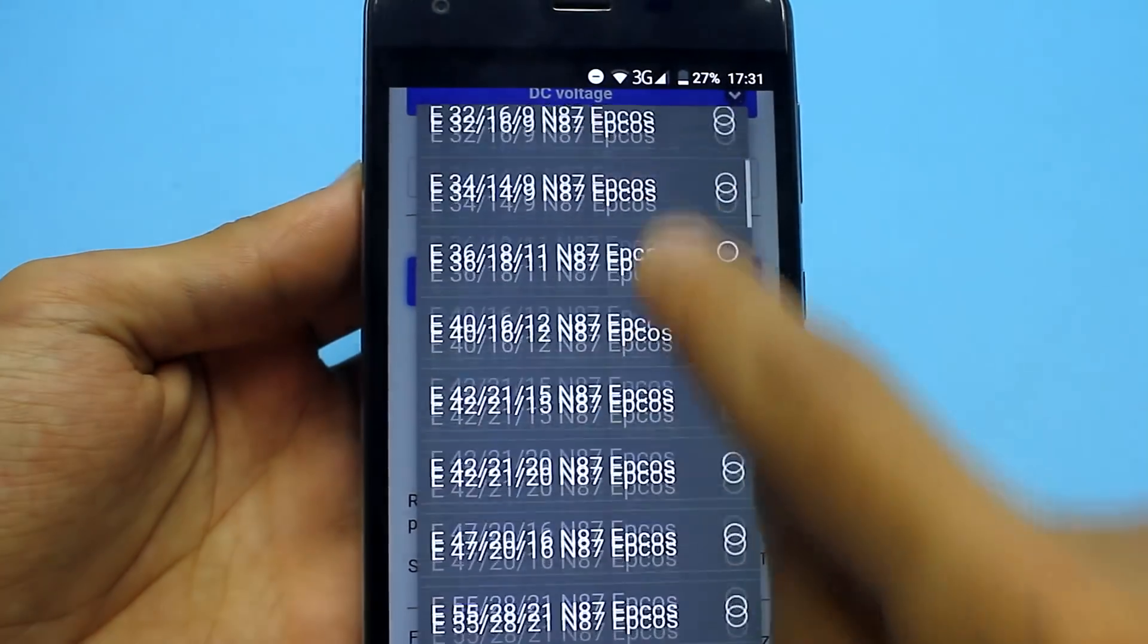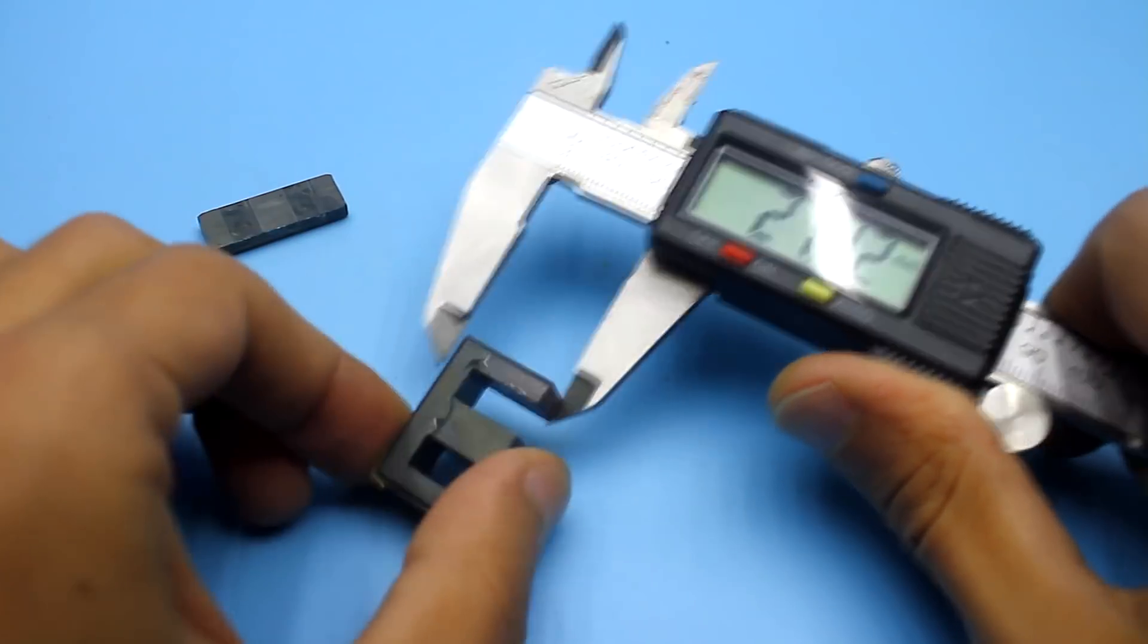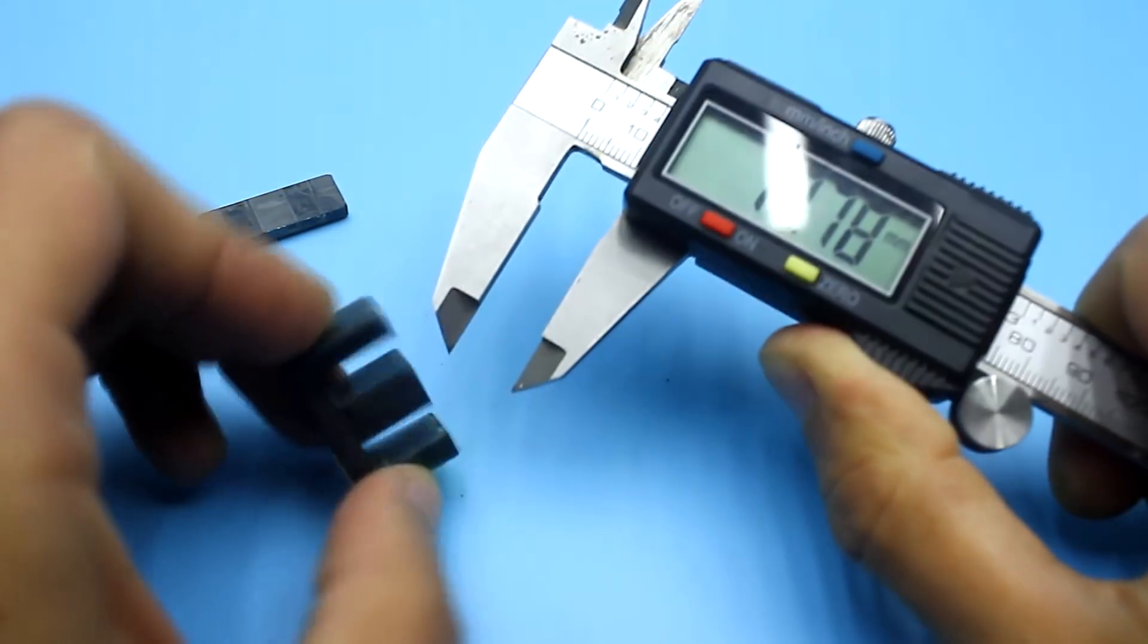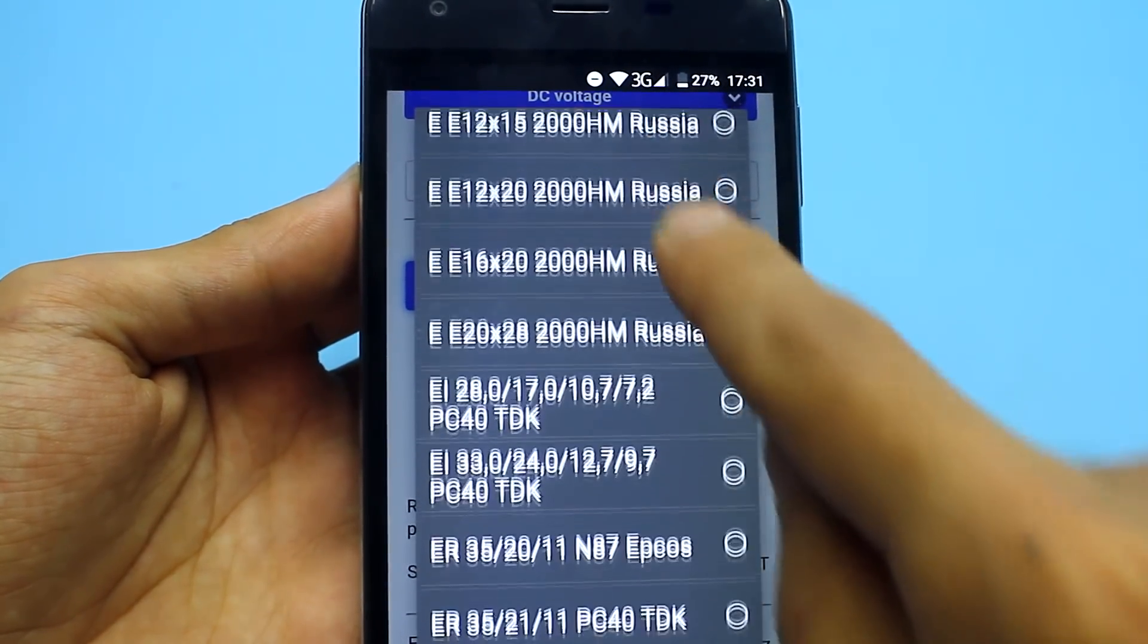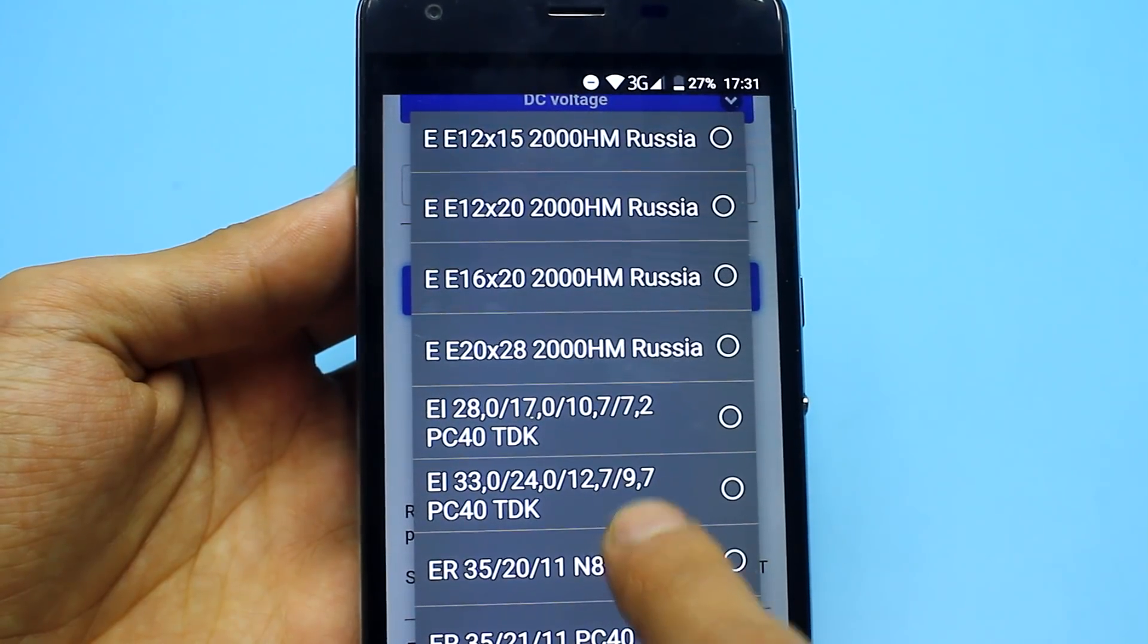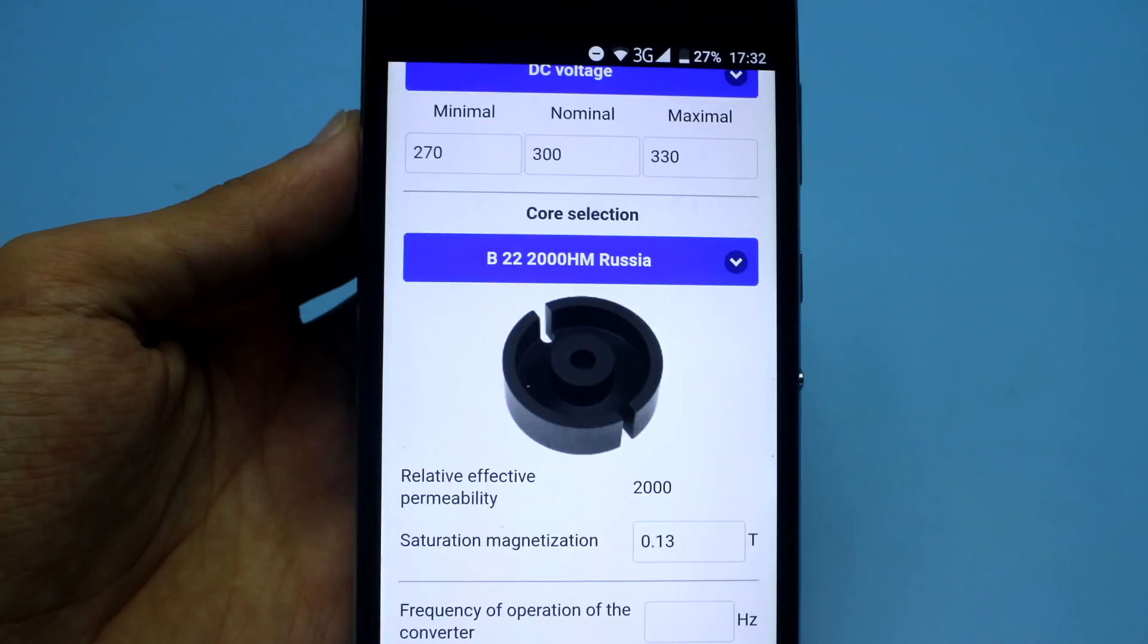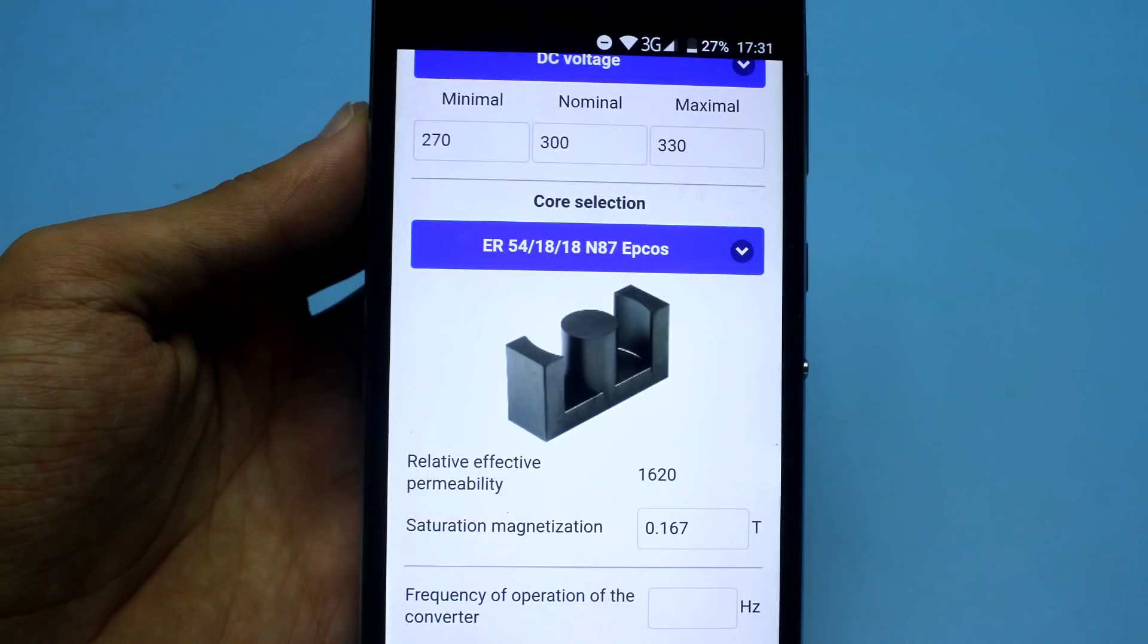Then, choose the core. Everything is simple. We just take an appropriate instrument and measure sizes. The application contains a huge database with the characteristics of popular cores of different shapes and even armored cups. You surely will find the core you need or, as similar as possible, by the parameters. The main thing is to look carefully. No need to introduce the main parameters of the core additionally. They are hidden from the user's eye to simplify the program.